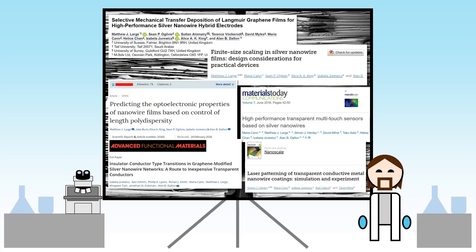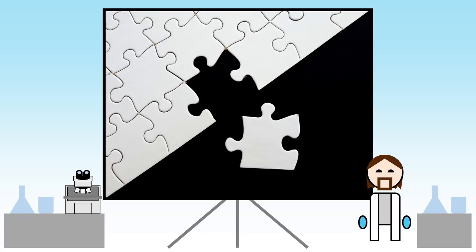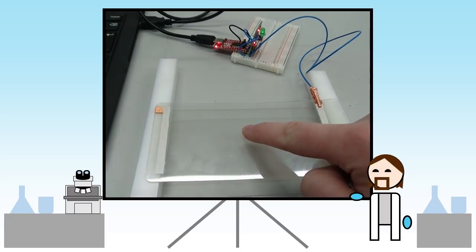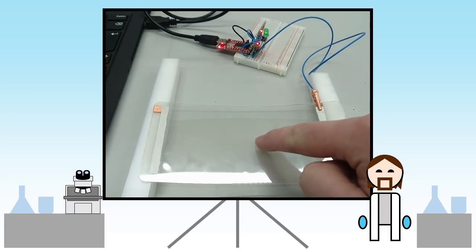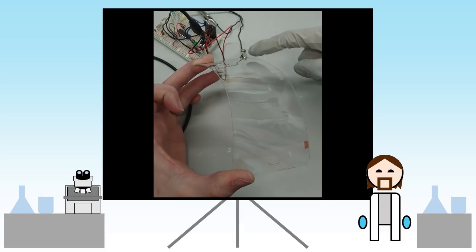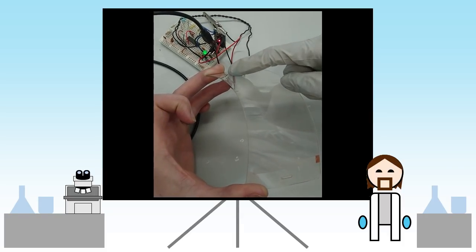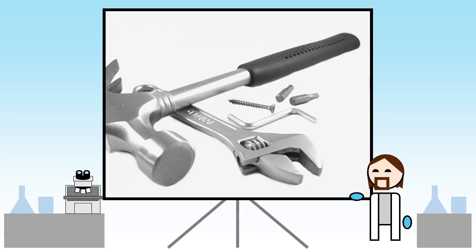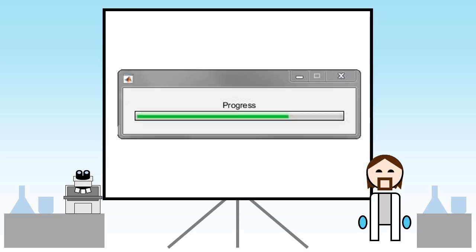My group has done quite a bit of work on understanding how silver nanowires can integrate into existing processes for making shatterproof touchscreens. As an example, I recently built a bendy sensor to show just how well this technology can work. Because nanowire films are very flexible, we can deposit them on plastic surfaces instead of glass.